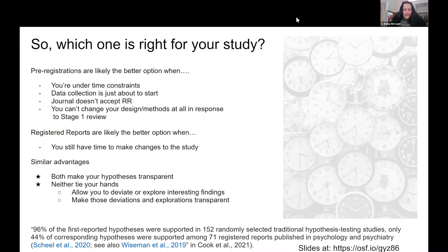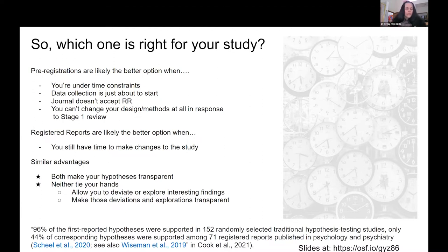Pre-registration may also be preferable if you genuinely cannot change your design and methods in response to stage one review — for example, a dissertation that's already been approved by your committee with a fixed design and methods. You have no flexibility to actually change it, so submitting a registered report may not be appropriate.